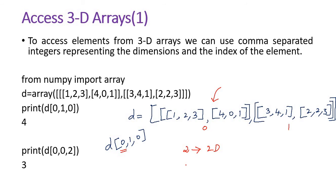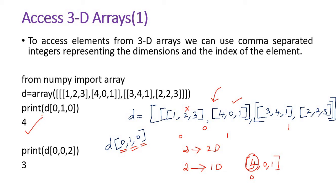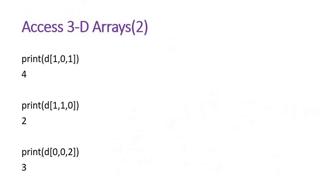To access D[0][1][0]: the 0 indicates we take the first 2D array. In that, there are two 1D arrays — index 0 and 1. The 1 indicates we take the second 1D array, which is [4, 0, 1]. Then index 0 of that gives 4. Similarly, D[0][0][2]: 0 means first 2D array, 0 means first 1D array [1,2,3], and index 2 gives 3. D[1][0][1] gives 4, and D[1][1][0] gives 2.